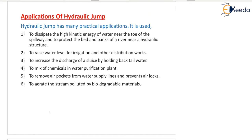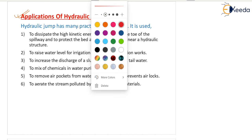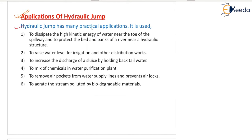Now we are going to see the applications of hydraulic jump. It has many practical applications. First, it is used to dissipate the high kinetic energy of water near the toe of the spillway and to protect the bed and banks of the river near a hydraulic structure — otherwise there are chances the structure will get damaged.